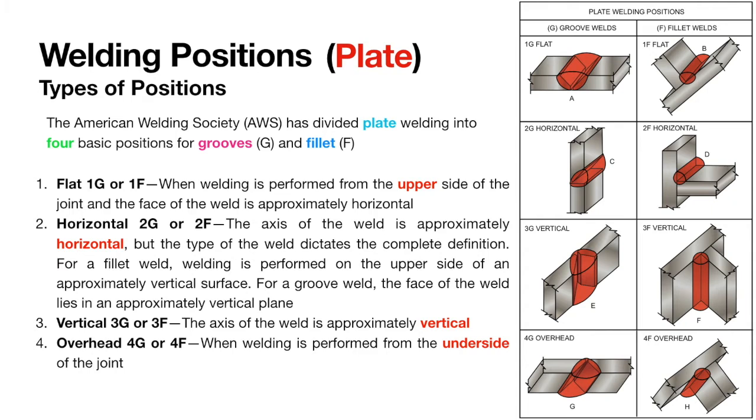Let's move to vertical 3G or 3F position. When welding vertically, the force of gravity pushes the molten metal downwards, so it has the tendency to pile up. To counter this, you can either use an upward or a downhill vertical position.